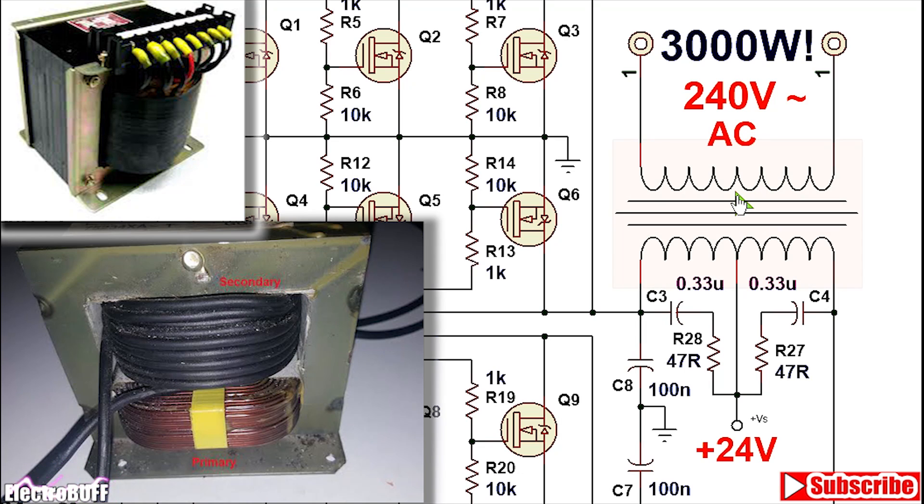The turns ratio between the primary and the secondary is about 1 is to 1 is to 10 for an input voltage of 24 volts and an output AC voltage of 240 volts. For 12 volts you need a ratio of 1 is to 1 is to 20.